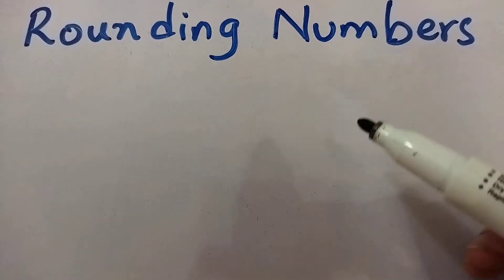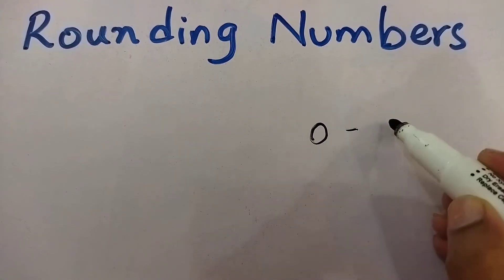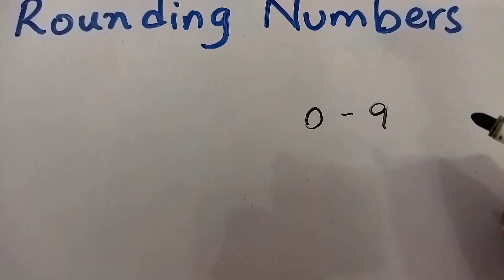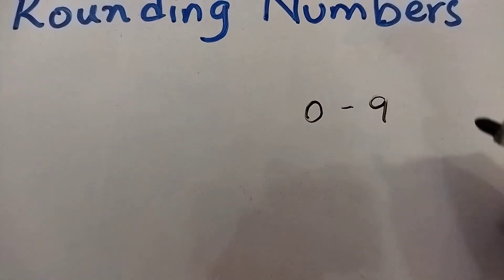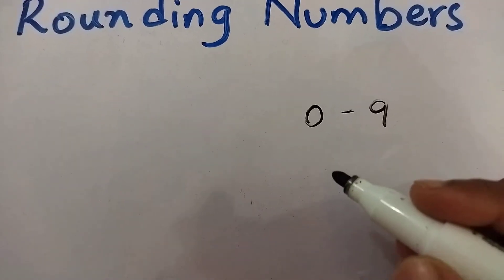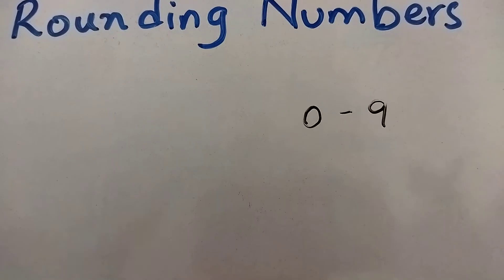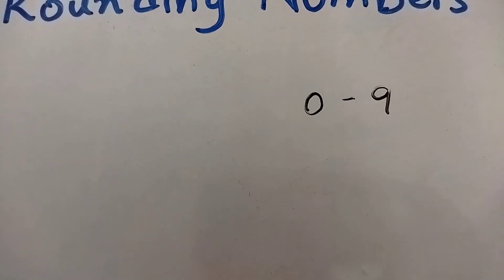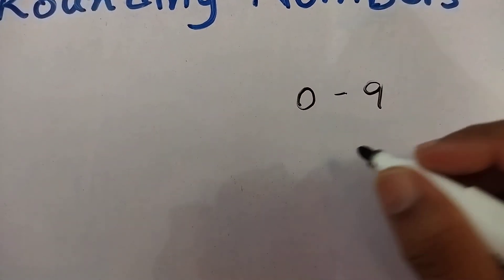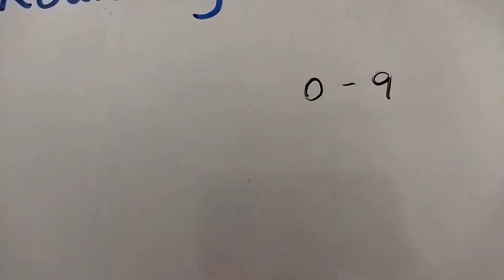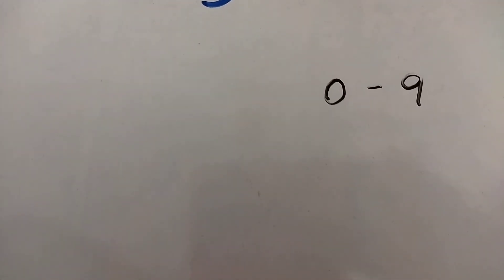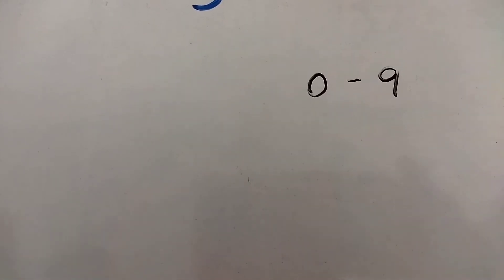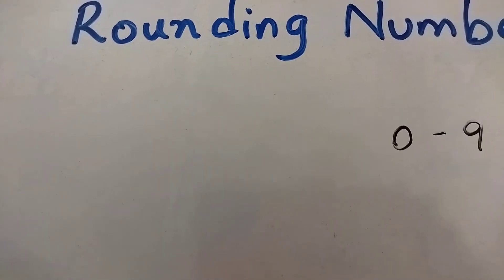Basically we want to learn this: if we have a number from 0 to 9, and we have to round it off to the nearest tens. We need to learn the general rule — how much we will round off when we say that you will round off to the nearest tens.